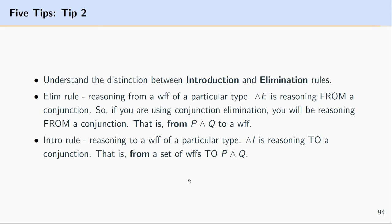In contrast, an introduction rule means you're reasoning to a formula of a particular type. With conjunction introduction, the resulting formula you derive will be a conjunction — you might reason from P on one line and Q on another line to P∧Q. The same idea applies to conditional introduction and disjunction introduction.